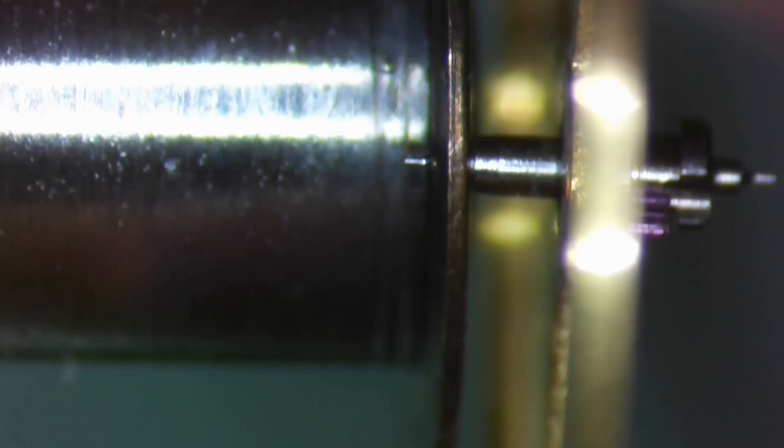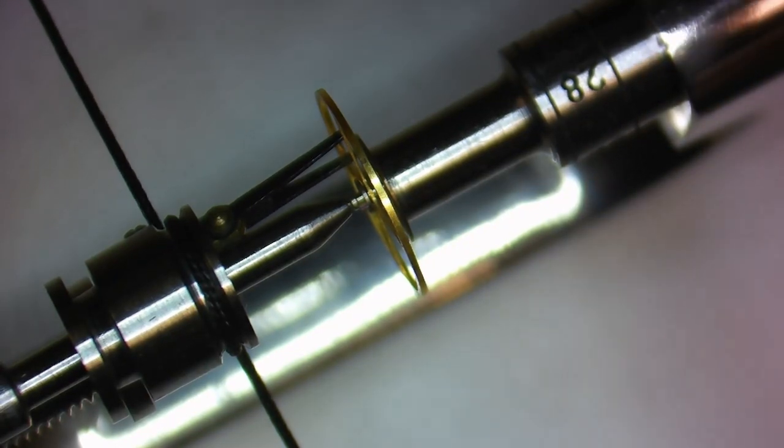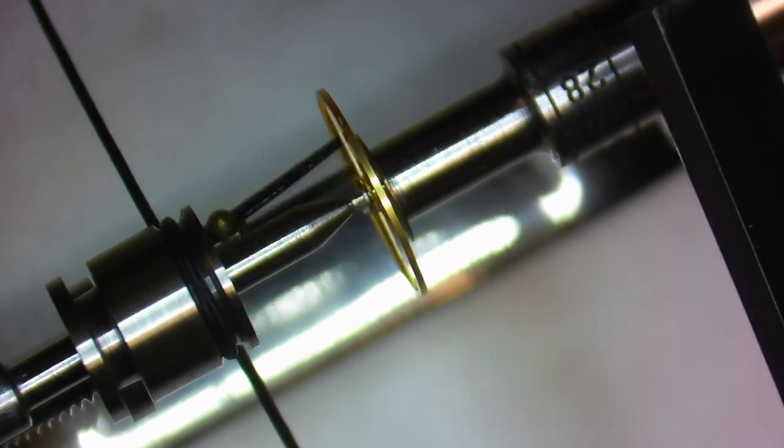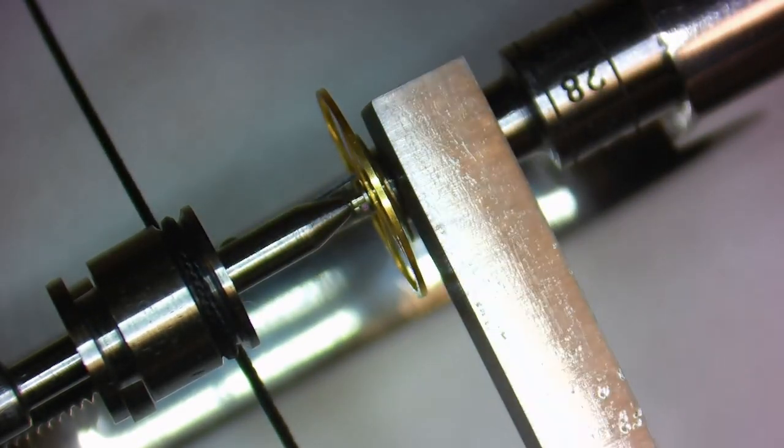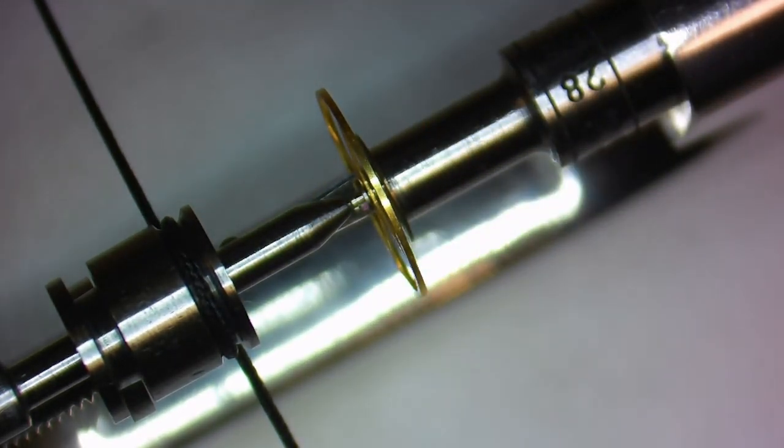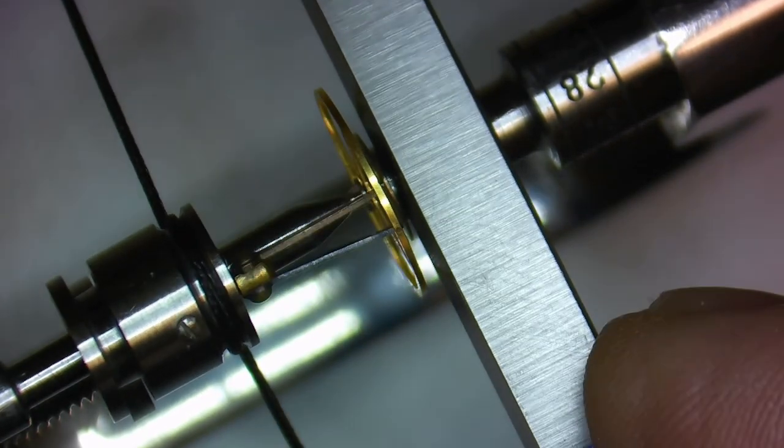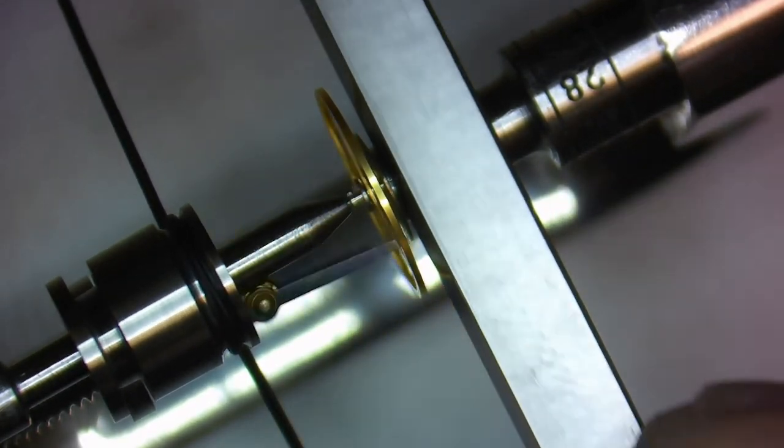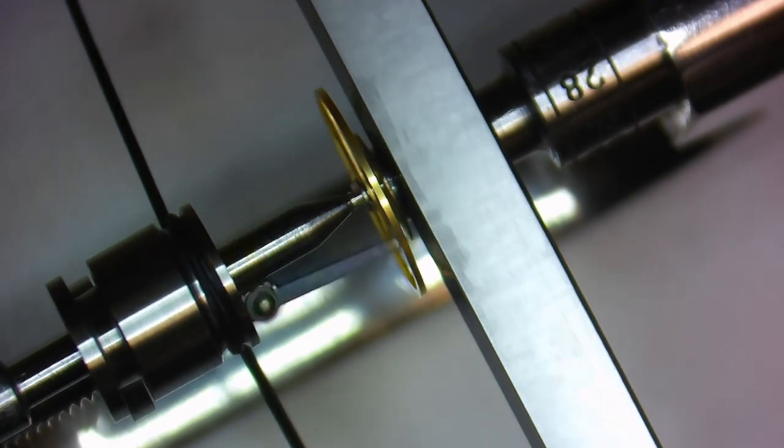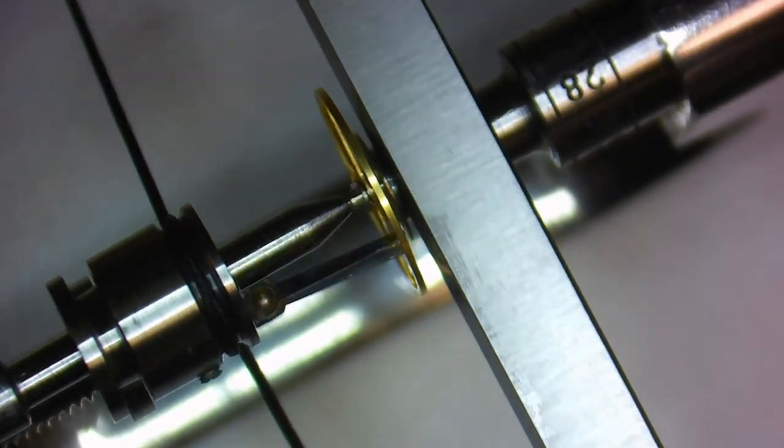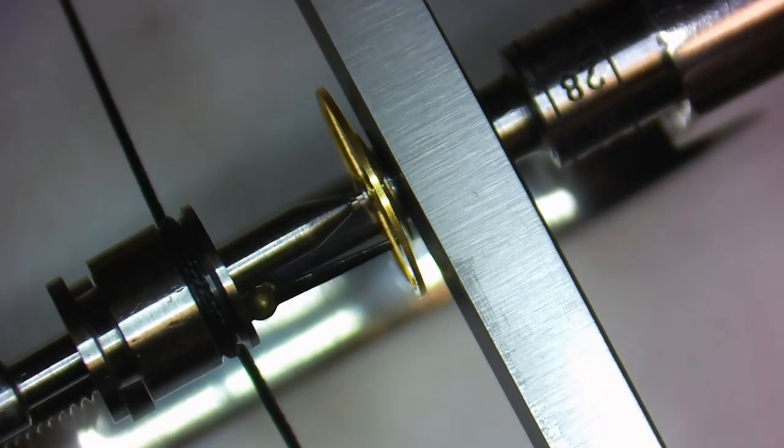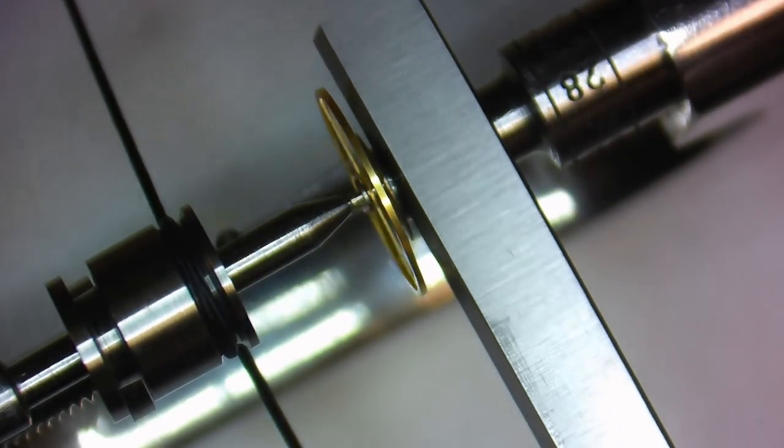You set up the lathe just like we did in my last video. So if you haven't seen it, I'll leave a link in the description. Burnishing pivots takes a light touch. Burnishing balance pivots takes a very, very light touch. It needs to be heavy enough to be able to stretch the metal, but not so hard that you're going to bend the pivot.